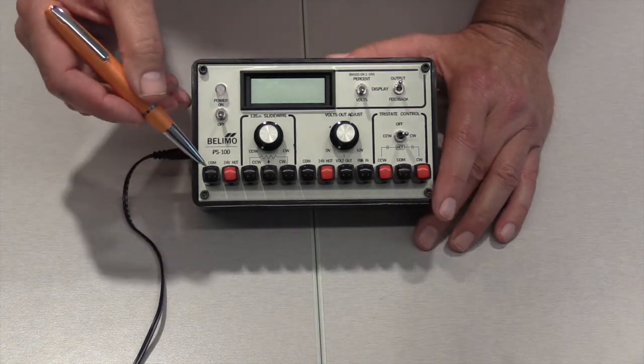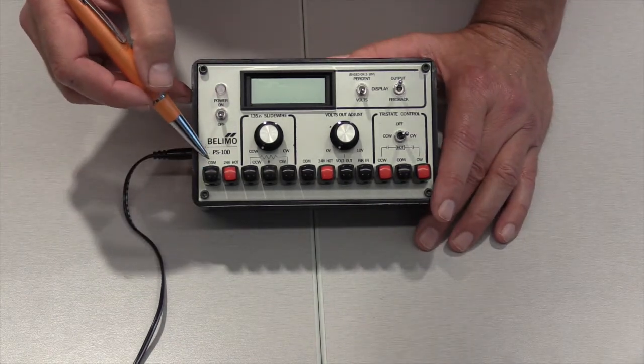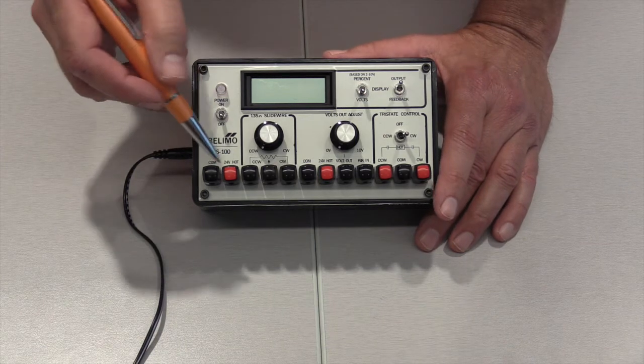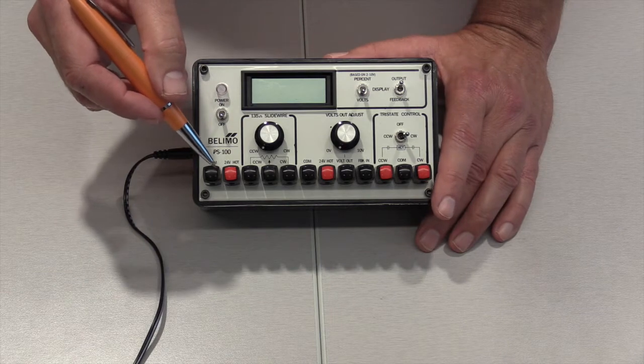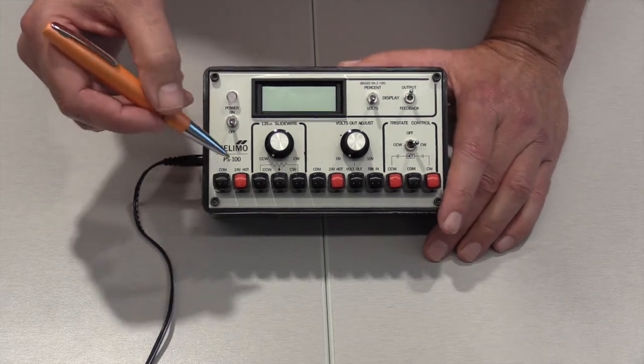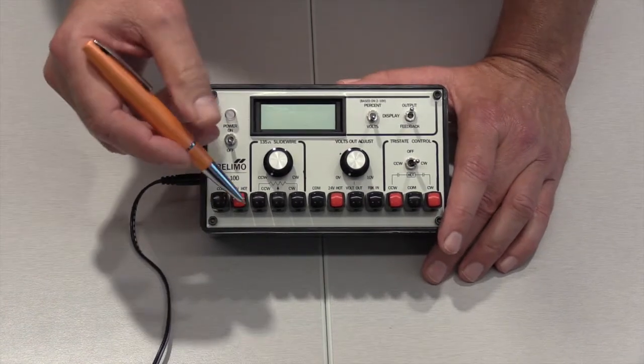Let's start with the first two posts right here and the very first one is a common. The very next one is a 24 volt hot and what that's for is this gives a constant 24 volt power out to the actuator and it's not changeable. It's a steady 24 volts.